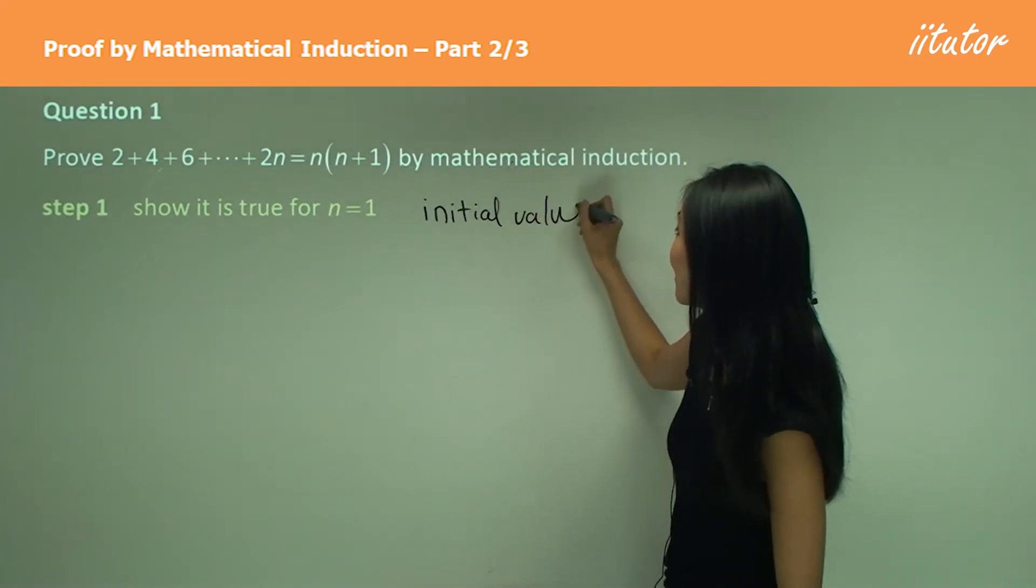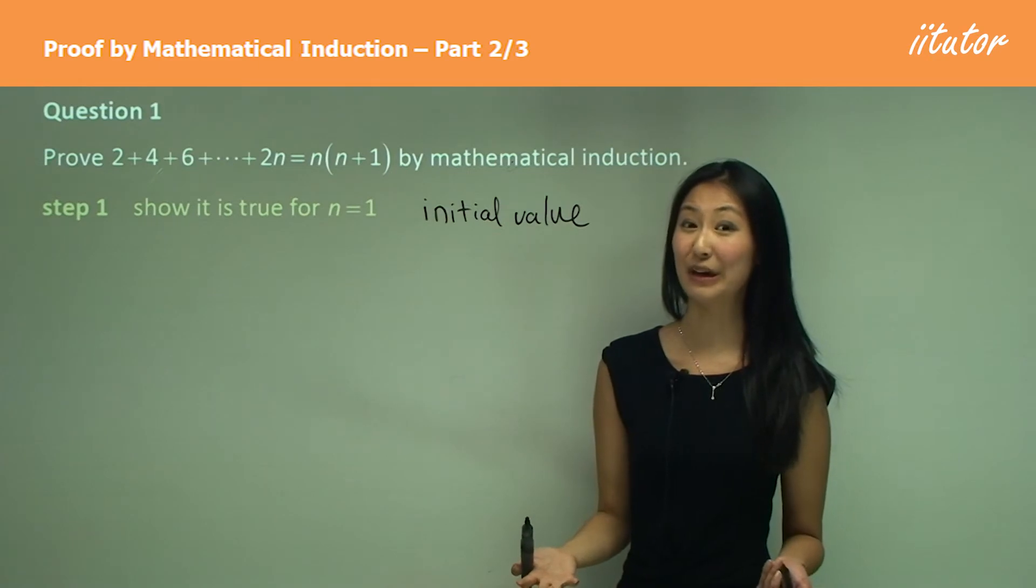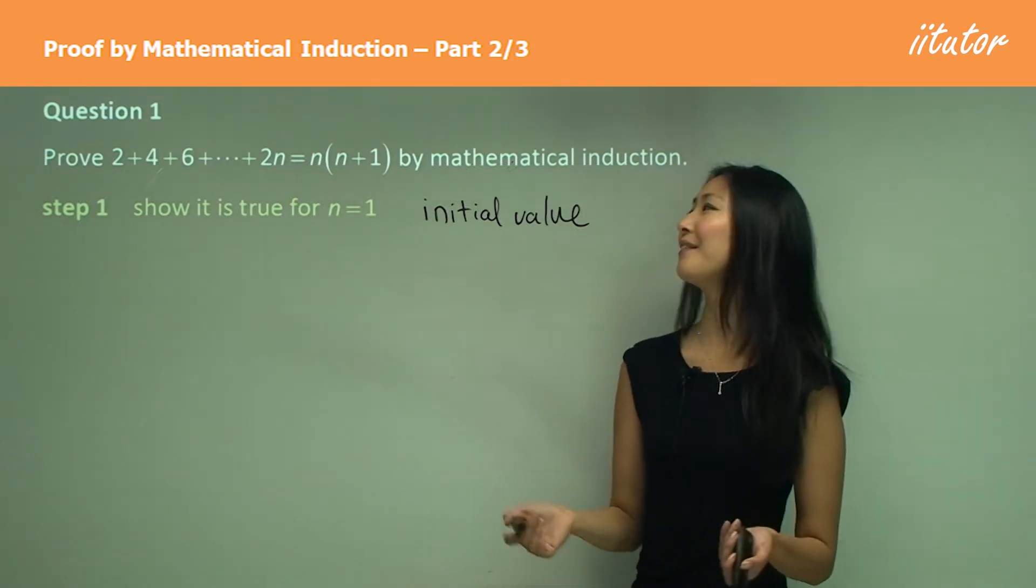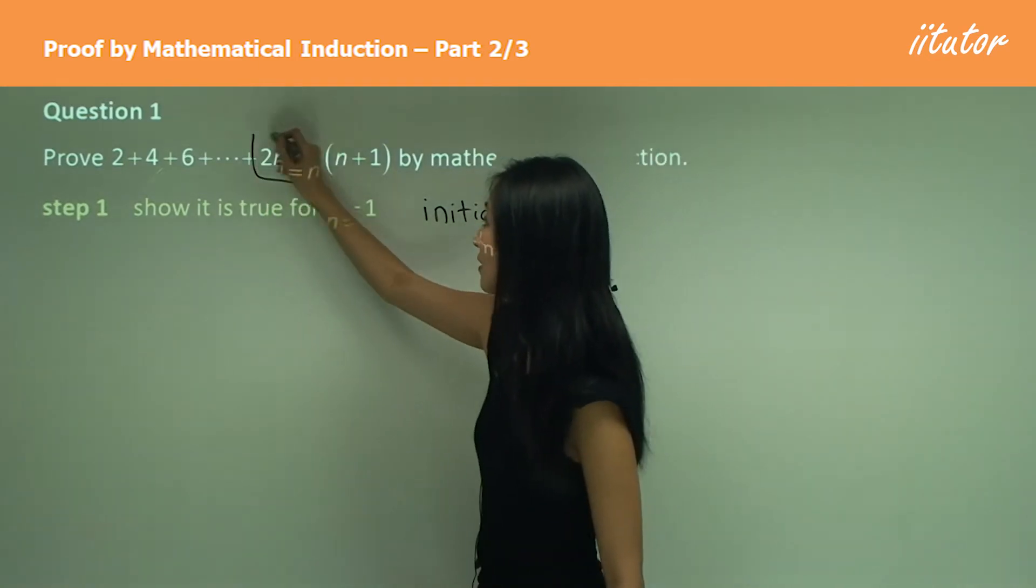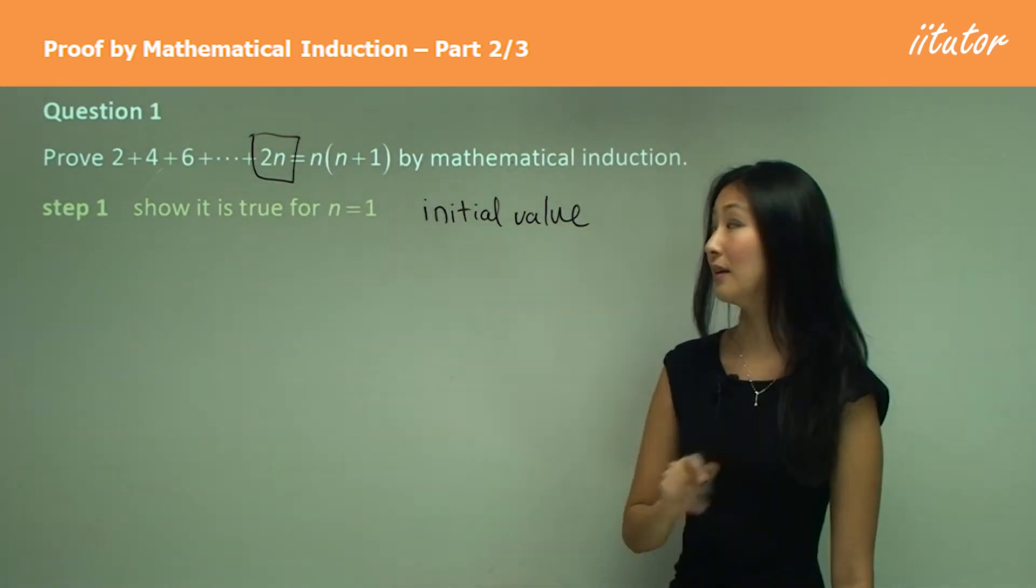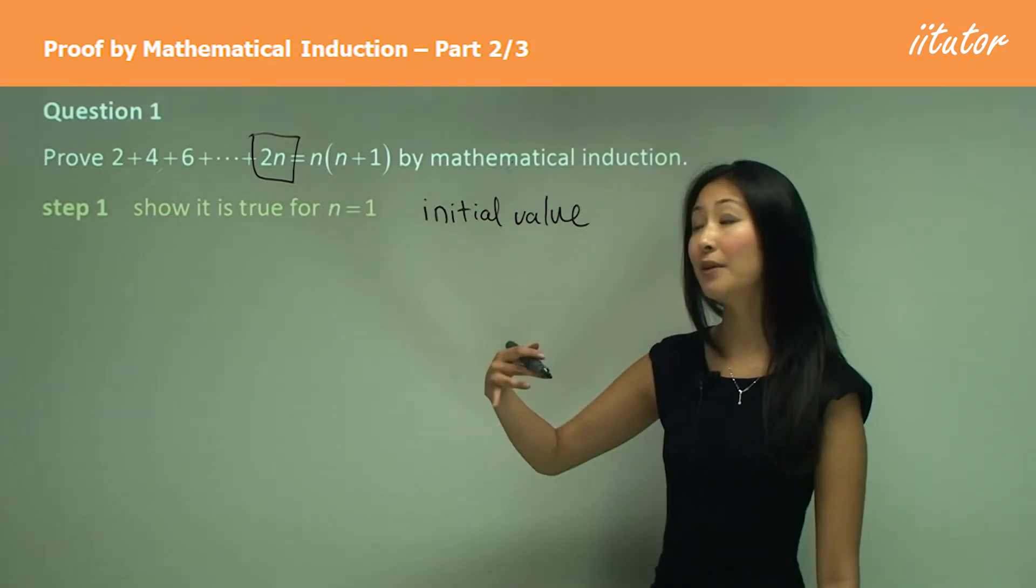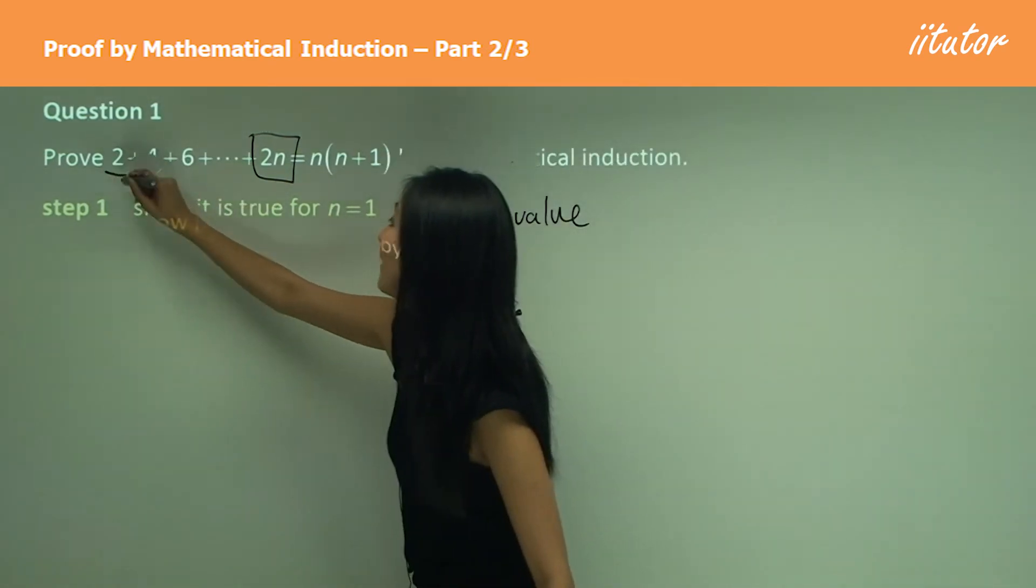Now we have to work out what is our initial value going to be, and how do we do that? Well, I'll teach you that now. What we consider is firstly your general formula here, which is 2n, and then we consider our first value.